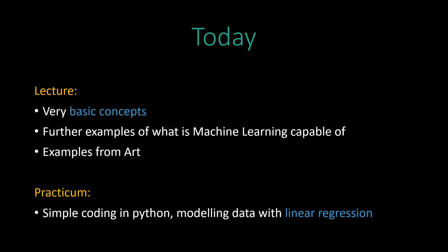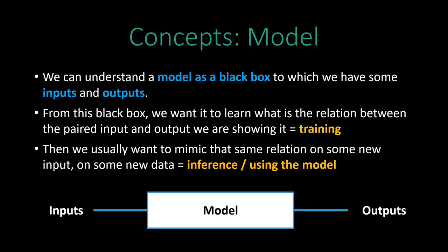That brings us to today's lesson. We will go through some very basic concepts, see more examples from art, and later go into some programming basics. We will also model data with a first model that is easy to understand. This brings us to the concept of a model. What is a model? In all of the previous examples we created something interesting, but we still need to start at a basic level — what is a model? A nice parallel is treating it as a black box with inputs on the left and outputs on the right.